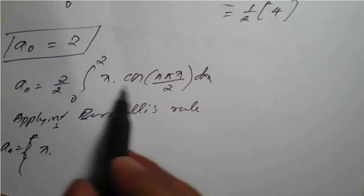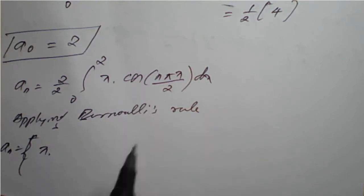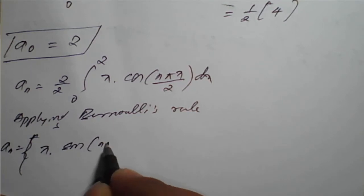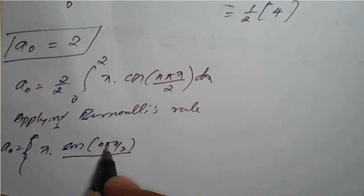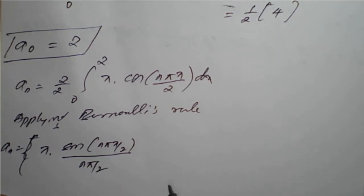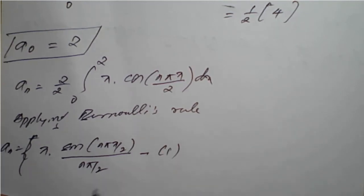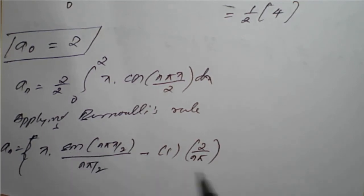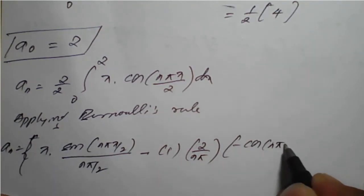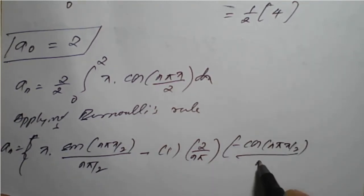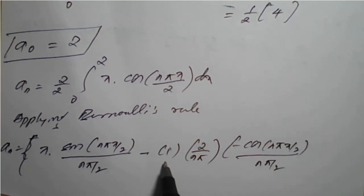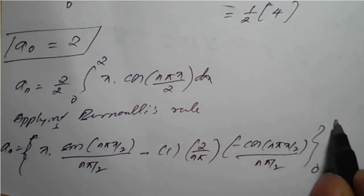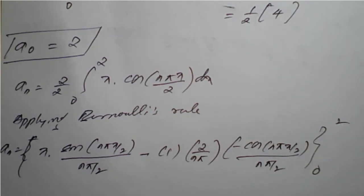Applying Bernoulli's rule: aₙ = [x · sin(nπx/2) / (nπ/2)] minus (2/nπ) times the integral of sin(nπx/2) dx, which gives minus cos(nπx/2) divided by (nπ/2), evaluated from 0 to 2. When we apply the limits to the sine term, it vanishes since sin(nπ) = 0.